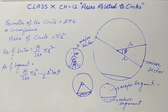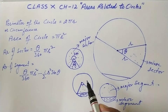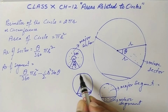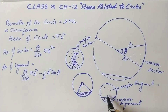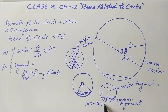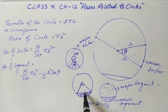Similarly, to find the area of the major segment, subtract the area of the minor segment from the area of the circle. For example, if the full circle area is 100 and the minor segment area is 30, then the major segment area is 70.